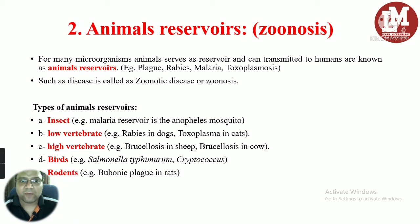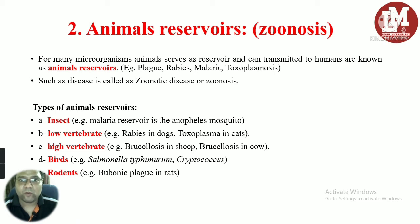There are various types of animal reservoirs. Insects are one classical example — the Anopheles mosquito serves as a vector for malaria. Low vertebrates include the dog for rabies and the cat for Toxoplasma. High vertebrates include sheep for brucellosis, and cows and buffaloes can also act as reservoirs. Birds can act as important reservoirs for Salmonella typhimurium and Cryptococcus. Rodents also serve as reservoirs — for example, rat fleas serve as a reservoir for bubonic plague.